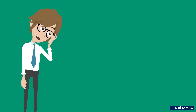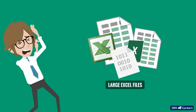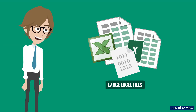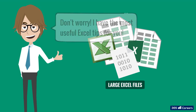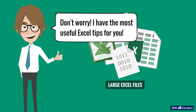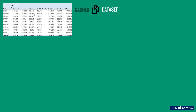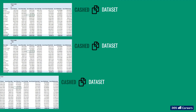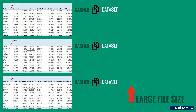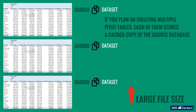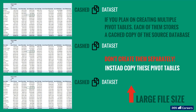I have suffered significantly from large Excel files in the past, and therefore want to help you avoid this pain. Pivot tables are efficient, but can consume a lot of space too, especially if you create multiple pivot tables, as each of them stores a cached copy of the dataset you're using as a source. So if you plan on creating multiple pivot tables that feed from the same source data, don't create them separately. Instead, copy these pivot tables and then simply adjust the fields of the copied pivot table. In this way, the source data will be cached only once.